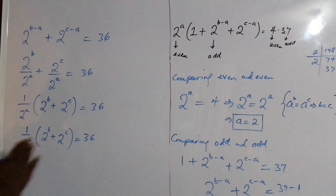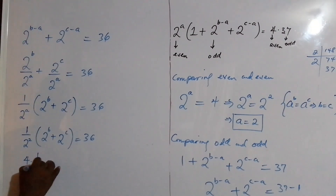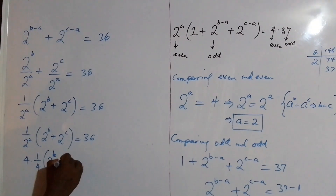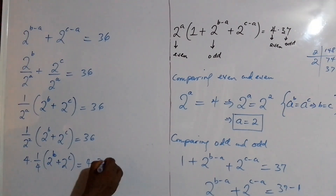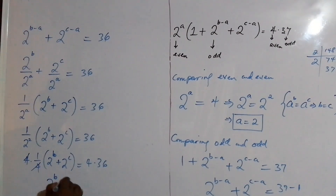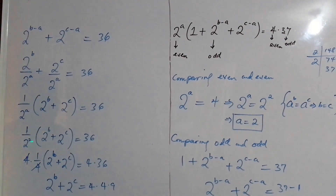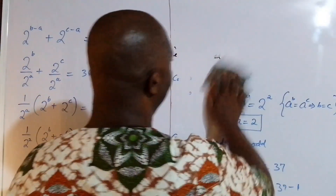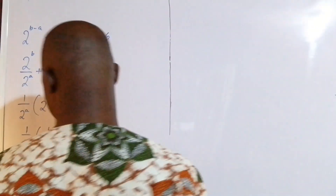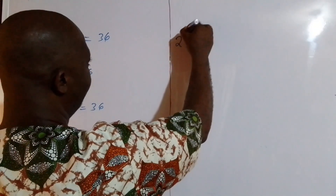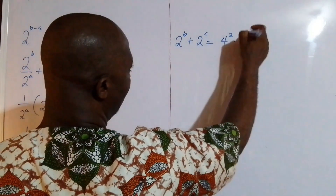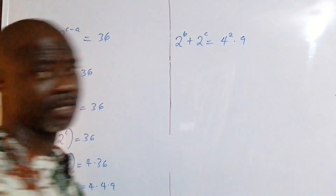Continuing from here, if we multiply both sides by 4 — since 1 over 2^2 is 1 over 4 — we get 2^B plus 2^C equals 4 times 36. I'm going to break 4 times 36 up as 4 times 4 times 9, which is 4 squared times 9. So 2^B plus 2^C equals 4 squared times 9, and since 4 squared is 16, we have 2^B plus 2^C equals 144.